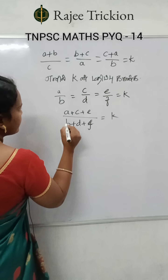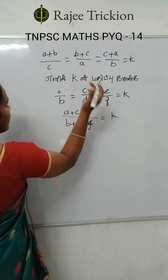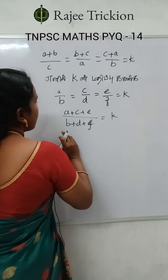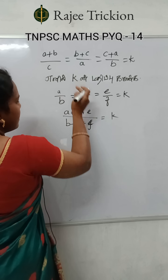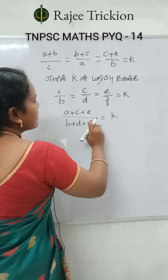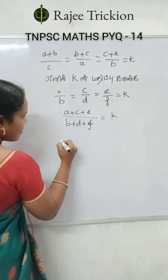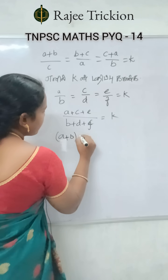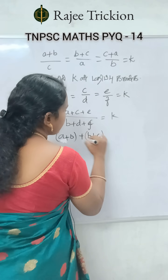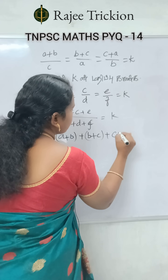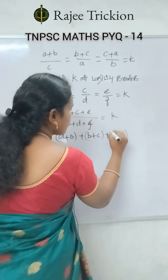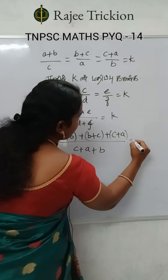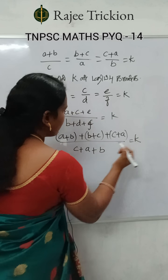So first, A is A plus B, C is B plus C, E is C plus A, B is A plus C, D is C plus A, F is A plus B. Adding the denominators: A plus B plus B plus C plus C plus A equal to C plus A plus B equal to K.